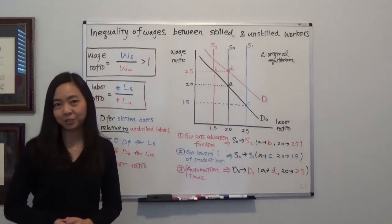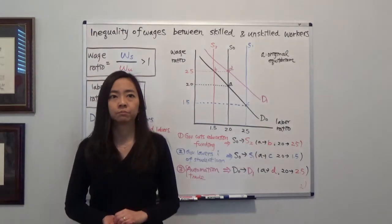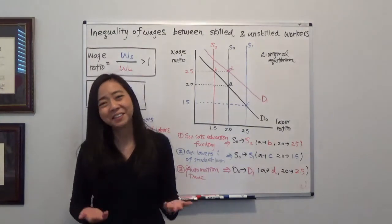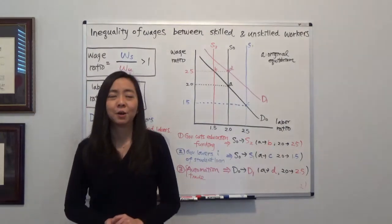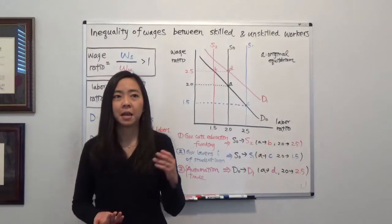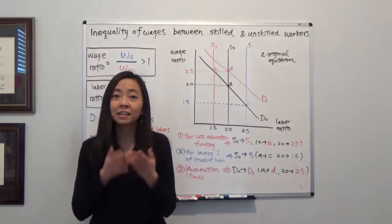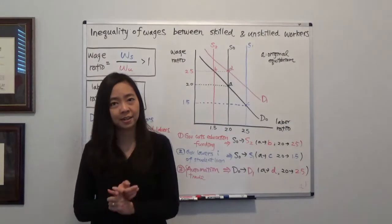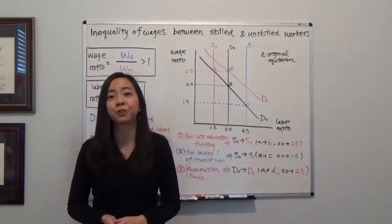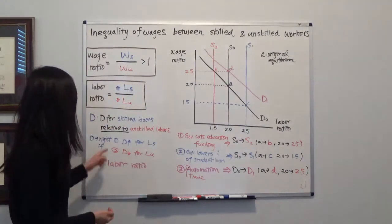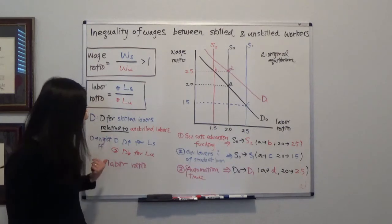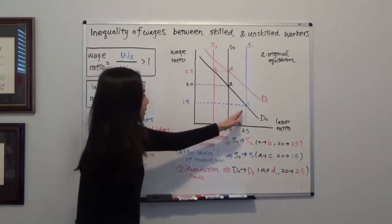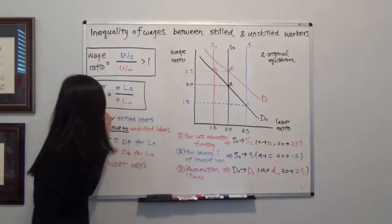Here's an analogy. Suppose you are considering dating two guys, Alex and Bob. If Bob didn't do anything but Alex is being very nice and sweet, you prefer Alex. If Alex didn't do anything but Bob is being very mean, you still prefer Alex. Or if Alex is nice and Bob is mean at the same time, you prefer Alex a lot more. Similarly, an increase in demand for skilled labor, a decrease in demand for unskilled labor, or both, will shift the demand curve from D0 to D1.